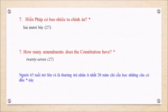Question 7: How many amendments does the U.S. Constitution have? 27.